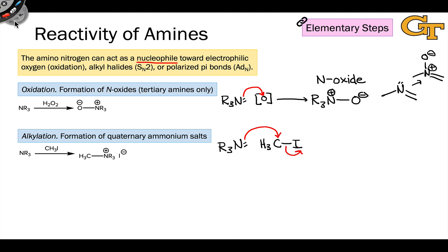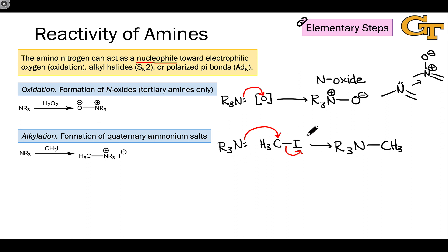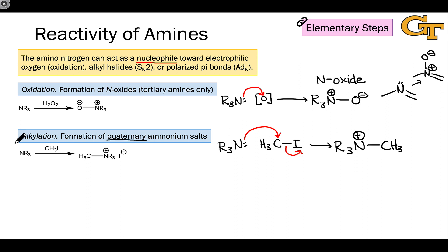We'll look at details in a future video, but the general reactivity shows that a great way to make carbon–nitrogen bonds is to use the nitrogen as a nucleophile and the carbon as an electrophile. If we've already got three alkyl groups linked to the nitrogen, this can result in the formation of what's called a quaternary ammonium salt — since we've added a fourth single bond using the lone pair of the nitrogen, leaving it positively charged. This is called alkylation since it installs an alkyl group at the amino nitrogen.